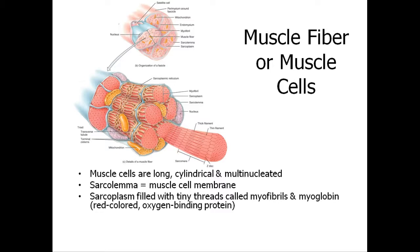Here we have a muscle fiber. You can see the muscles are long, cylindrical, and multi-nucleated — multiple nuclei within them. The sarcolemma refers to the muscle cell membrane, and the sarcoplasm is filled with tiny little threads called myofibrils, along with some myoglobin as well.